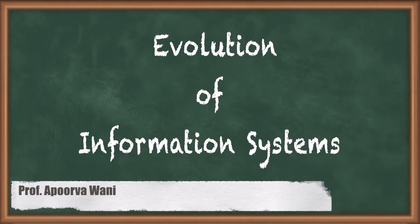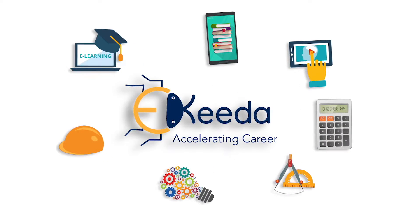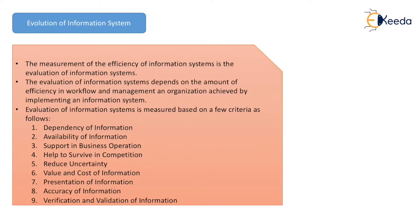Hello friends. In this video we are going to see how the evaluation of information system happens — what are the different processes we follow. The evaluation of information system is a measure of the efficiency of information system. It depends on the amount of efficiency in workflow and management and organization achieved by the implementation of an information system.